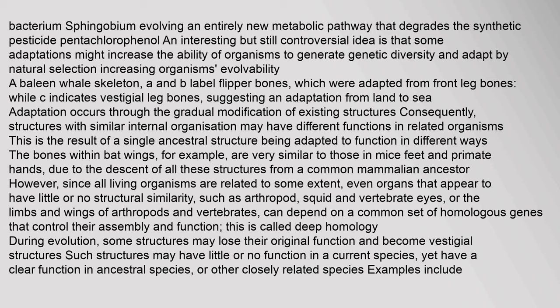Structures with similar internal organization may have different functions in related organisms — the result of a single ancestral structure being adapted to function in different ways. The bones within bat wings, for example, are very similar to those in mice feet and primate hands, due to descent from a common mammalian ancestor. Since all living organisms are related to some extent, even organs that appear to have little structural similarity, such as arthropod, squid, and vertebrate eyes, or the limbs and wings of arthropods and vertebrates, can depend on a common set of homologous genes that control their assembly and function — this is called deep homology.